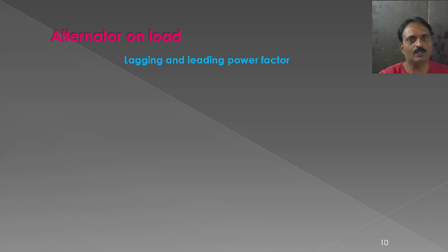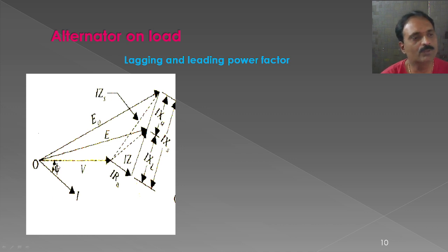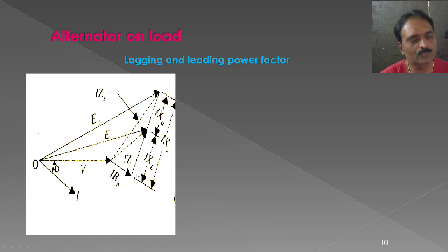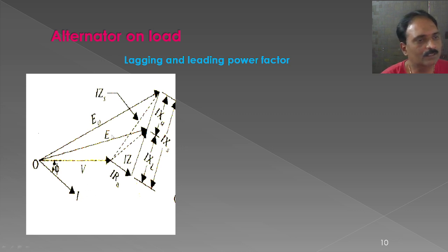For an inductive load — that is lagging power factor — the current lags behind the voltage by an angle of phi. I×RA is drawn parallel to I, and I×XL and I×XA are 90 degrees leading with respect to I×RA. E is the resultant of V, I×RA, and I×XL. E0 is the resultant of V, I×RA, I×XL, and I×XA — the same structure as before, only the current is lagging.